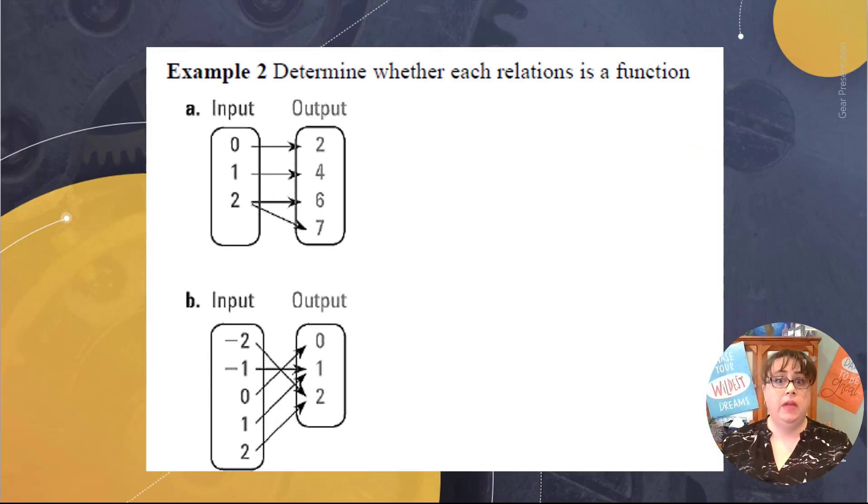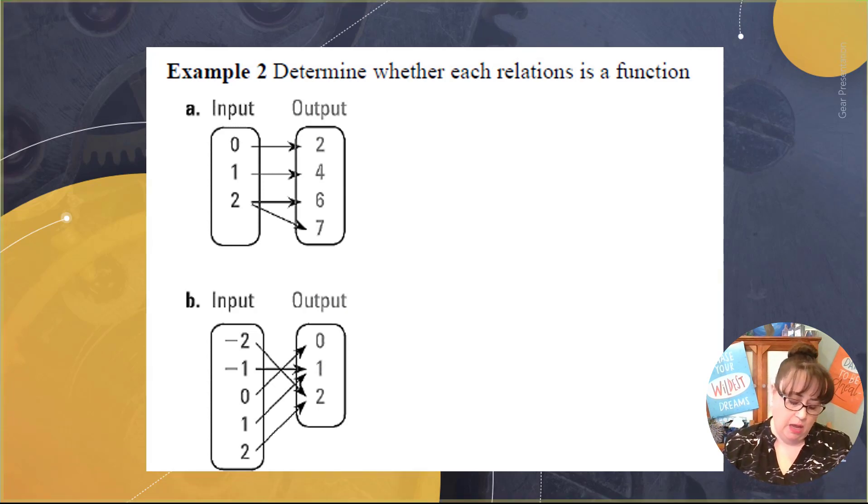On this one we are looking at is a mapping diagram a function. And remember that means that each input has to go to exactly one output. And so that's what we're going to do. We are going to look at each input and does it go to exactly one output.